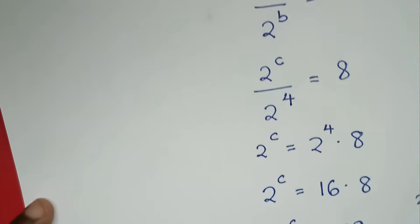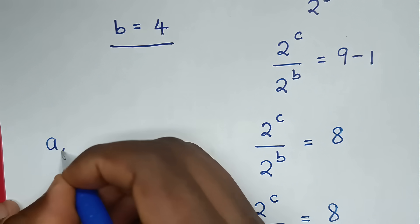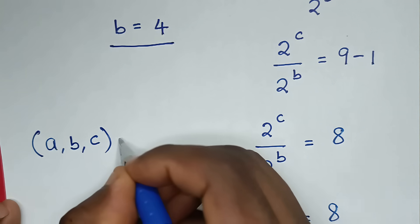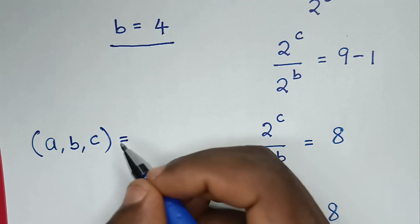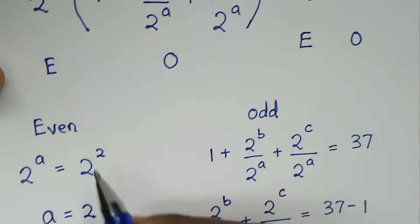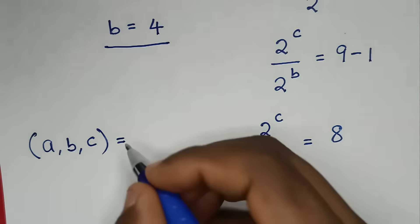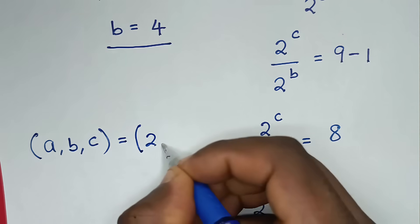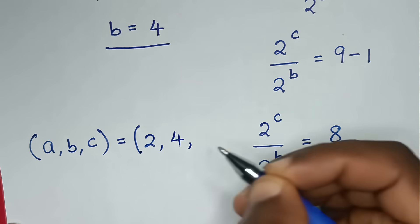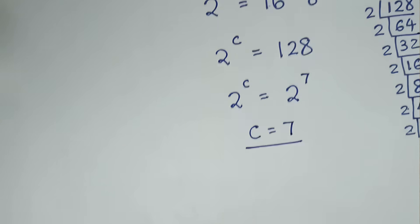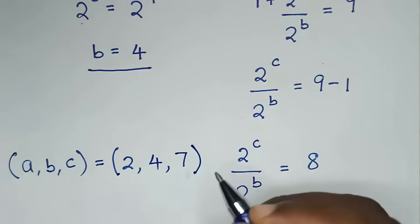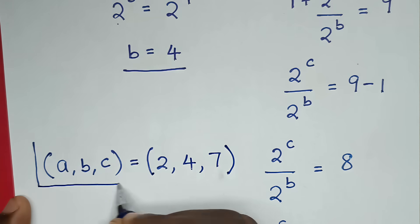So the final answer: A equals 2, B equals 4, C equals 7. This is the final answer for our problem.